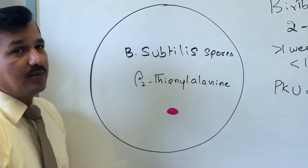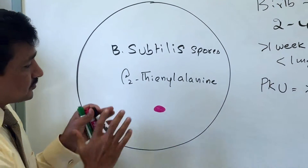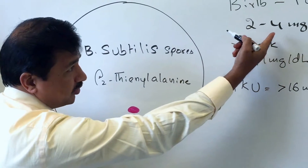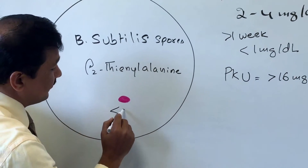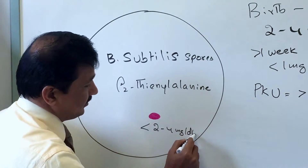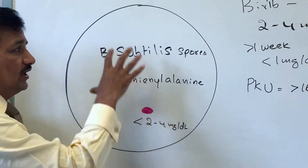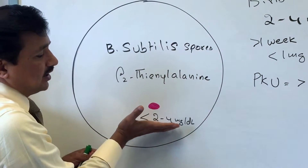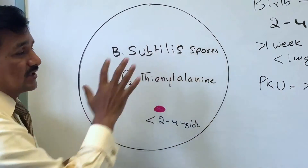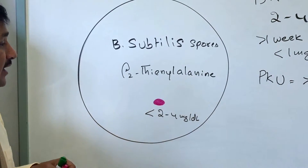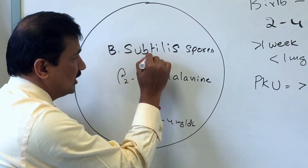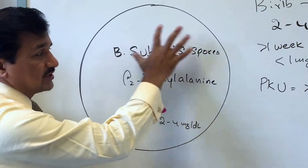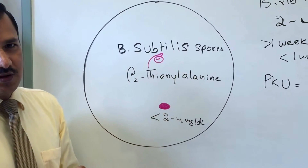On the petri dish we have agar media with Bacillus subtilis spores, beta-2-thienylalanine, and the blood sample from the baby taken at the seventh day. If the baby's blood phenylalanine level is less than two to four milligrams per deciliter, we do not see growth of Bacillus subtilis — no colonies appear on the agar media. This is because beta-2-thienylalanine has an inhibitory effect on Bacillus subtilis spores, preventing them from germinating.